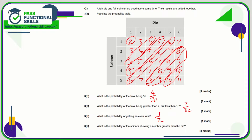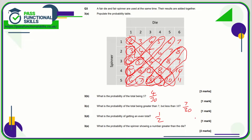For part e, the probability that the spinner shows a number greater than the die. On the diagonal, the spinner and die have the same number — one-one, two-two, three-three. The numbers where the spinner is greater than the die are on one side of the diagonal. That's one, two, three, four, five, six, seven, eight, nine, ten — so ten out of thirty, which simplifies to one third.